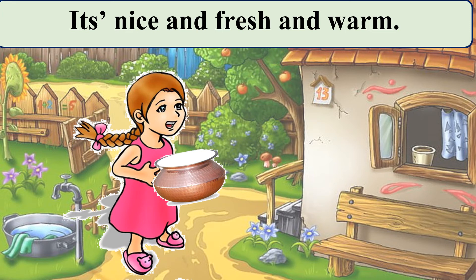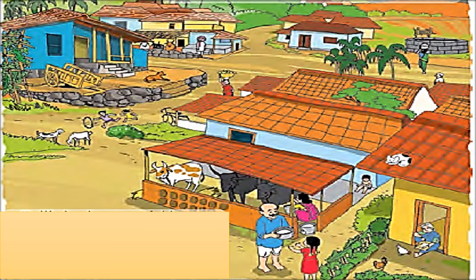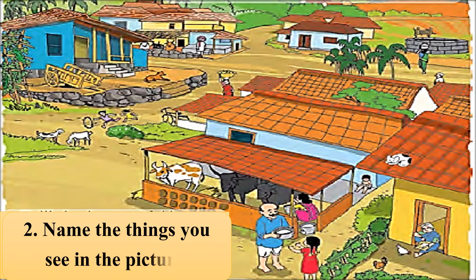So that's how Priya has introduced herself and her village — this is the first activity we have done. We saw the picture, looked into our books, and repeated together. Now there is one more very nice activity — Activity number 2. We will name the things we see in the picture from our textbook. You have to name them in English, not in your mother tongue — and I know you know the names of all those things!